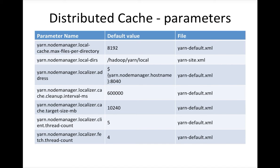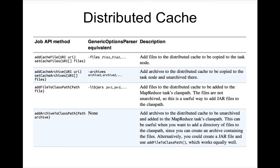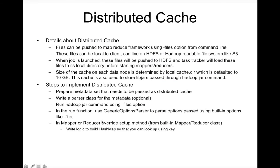You can add files to the cache either by passing the minus files command-line argument as part of the Hadoop jar command, or by using the job API method called addCacheFiles. You can pass files directly using addCacheFiles and setCacheFiles; correspondingly for archives there are similar methods, and likewise for libjars. Files can live locally on the client, on HDFS, or on any Hadoop-readable file system like S3. When the job is launched, these files will be pushed to HDFS and the task tracker will load them to its local directory before starting mappers or reducers.